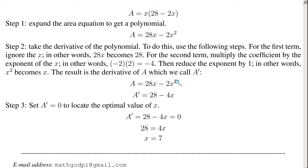And then reduce the 2, the exponent of 2, to a 1. So instead of x squared, it's now x. Negative 2x squared becomes negative 4x.